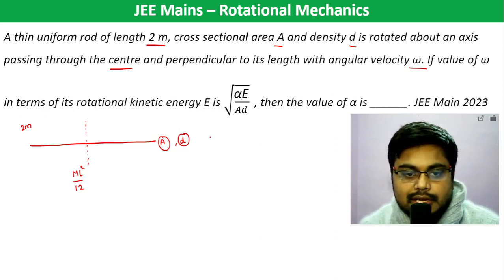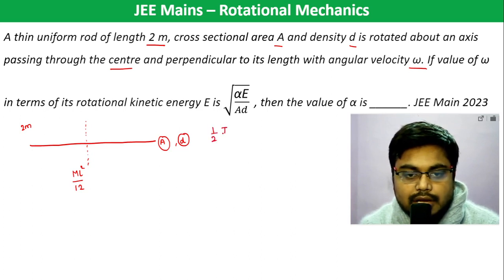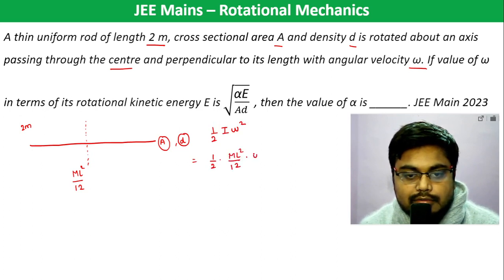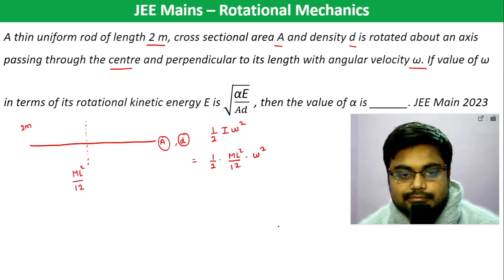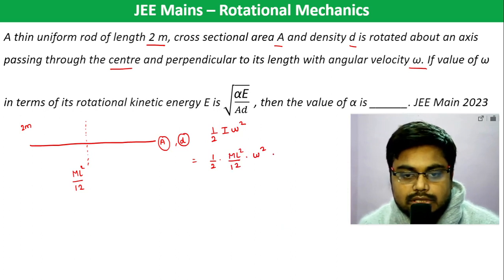Rotational kinetic energy will be half I omega squared, which is equal to half times ML squared by 12, into omega squared. This is the rotational kinetic energy.